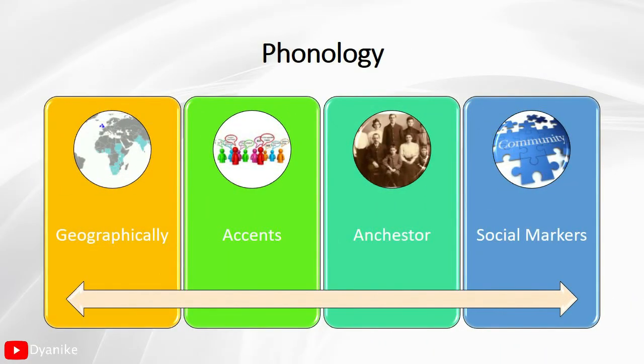Phonology is affected by some factors: geographical location, accent, ancestry, and social markers. For example, people from countries such as Italy and France will have different pronunciations in English compared to people from Japan, Indonesia, or other countries.